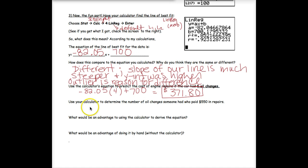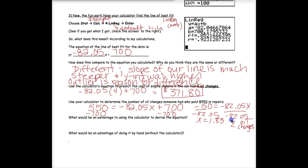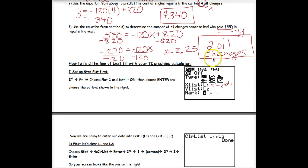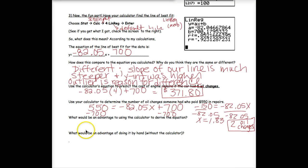Then we want to do the same thing. Predict the number of oil changes for someone who paid $550. So $550 is the y. 550 equals negative 82.05x plus 700. Subtract the 700 first. So then we've got negative 150 equals negative 82.05x. Now we're going to divide, and we find x equals 1.83 approximately. It's above the 0.5, so I'm going to round it up. We're going to say two oil changes. Notice, even though our equations were pretty different, we still got the same answer and a very close answer here.